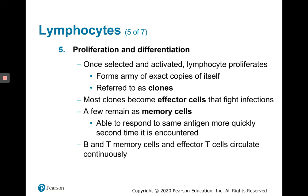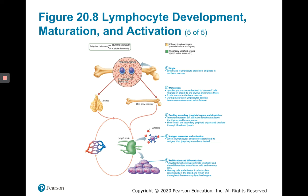Memory cells are able to respond to the same antigen the next time an individual encounters that specific antigen. Second or subsequent encounters with an antigen can produce a much stronger response because of memory cells. B and T memory cells and effector T cells circulate continuously. The steps of lymphocyte development, maturation, and activation are: origin, maturation, seeding, antigen encounter and activation, and then proliferation and differentiation.